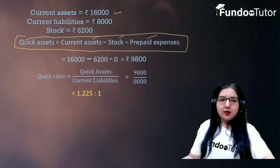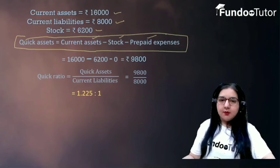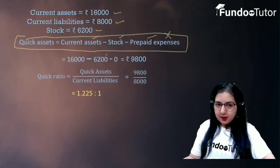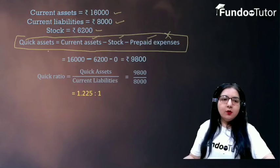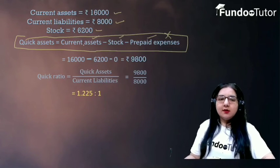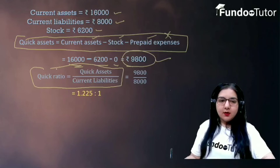Current assets is 16,000 and current liabilities is 8,000. Stock is given as 6,200, but prepaid expenses हमें given नहीं है, so we will substitute 0 instead of prepaid expenses. So quick assets is equal to 16,000 minus 6,200 minus 0, which is 9,800.